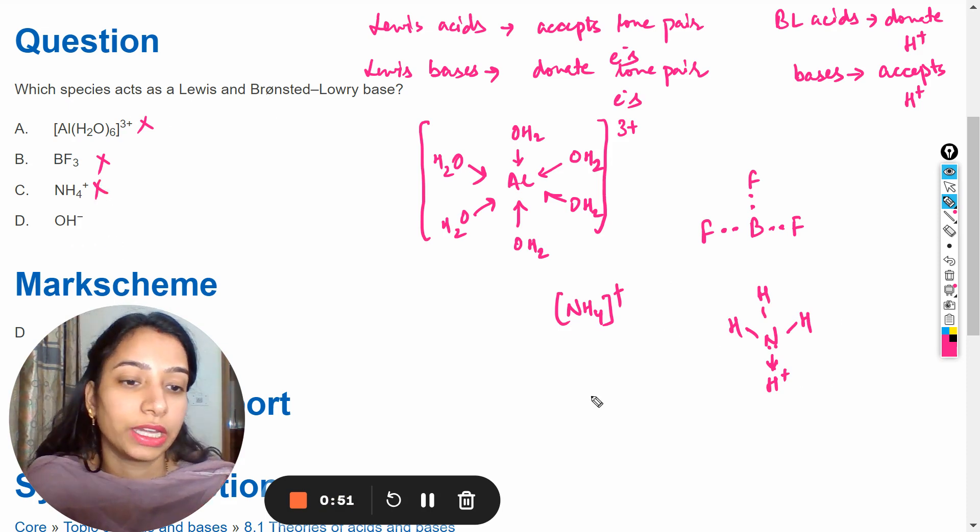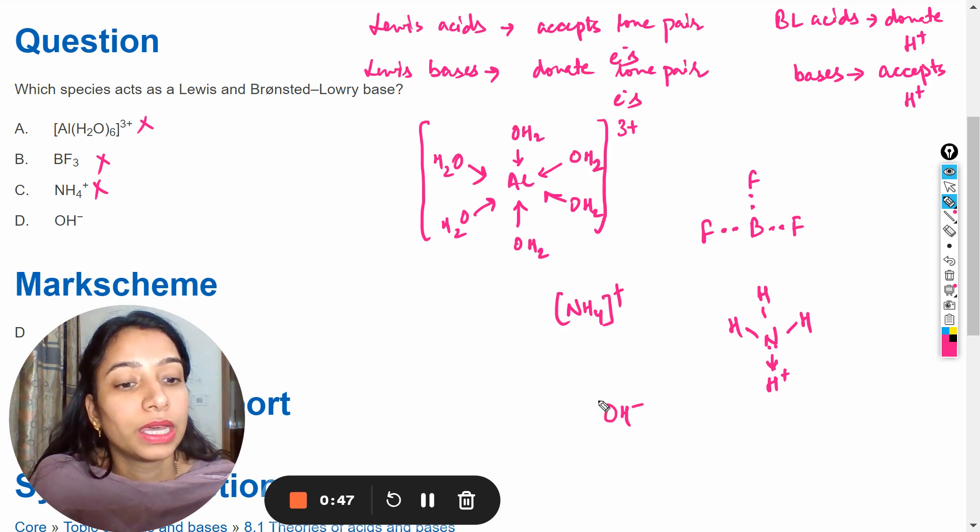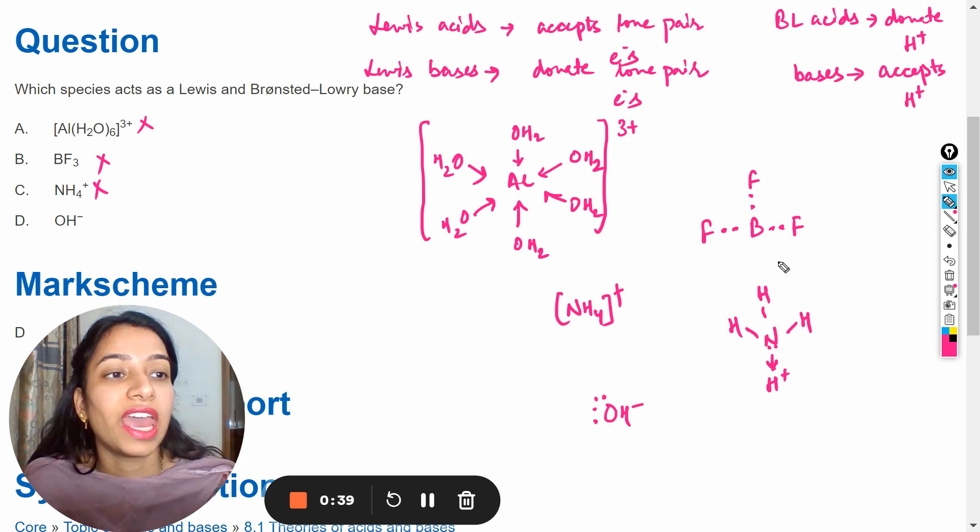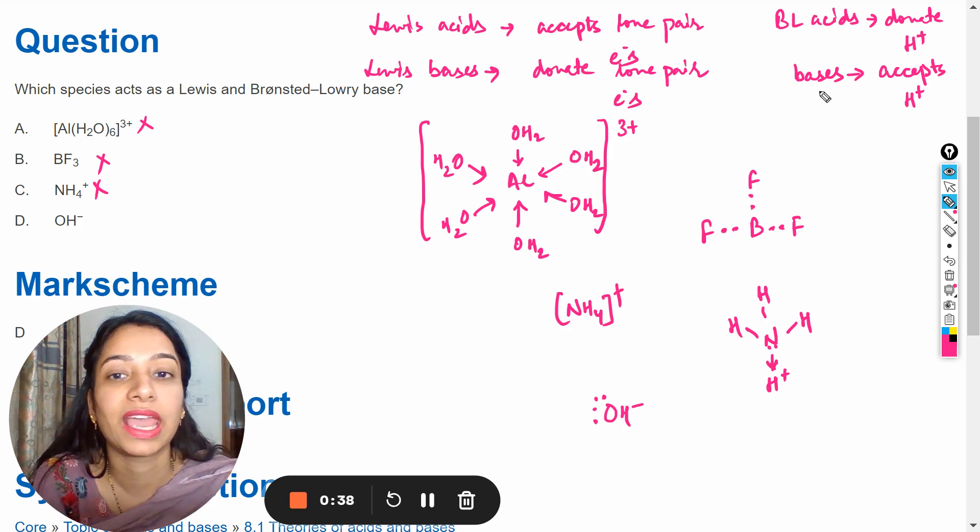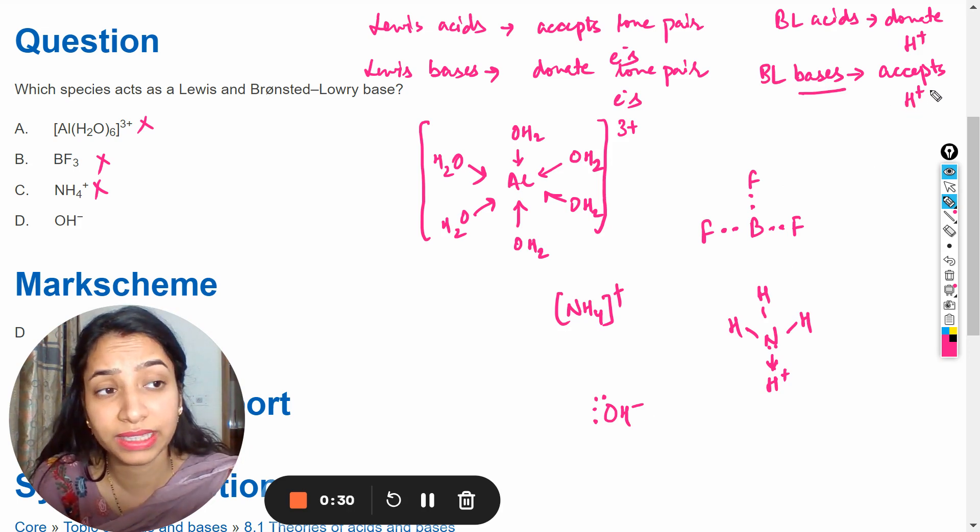Next is OH negative. So here there are two lone pairs on oxygen atoms. So it can act as Lewis base as well as it can act as Bronsted-Lowry base. Why? Because it can accept the proton that is H positive.